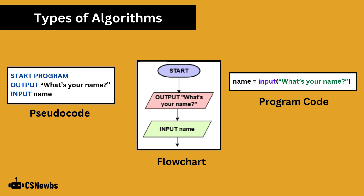There are three ways to write an algorithm that you need to know: writing pseudocode, drawing a flowchart, and writing in a high-level programming language like Python or Java. Each of these methods has its own video in section 2.1.2.